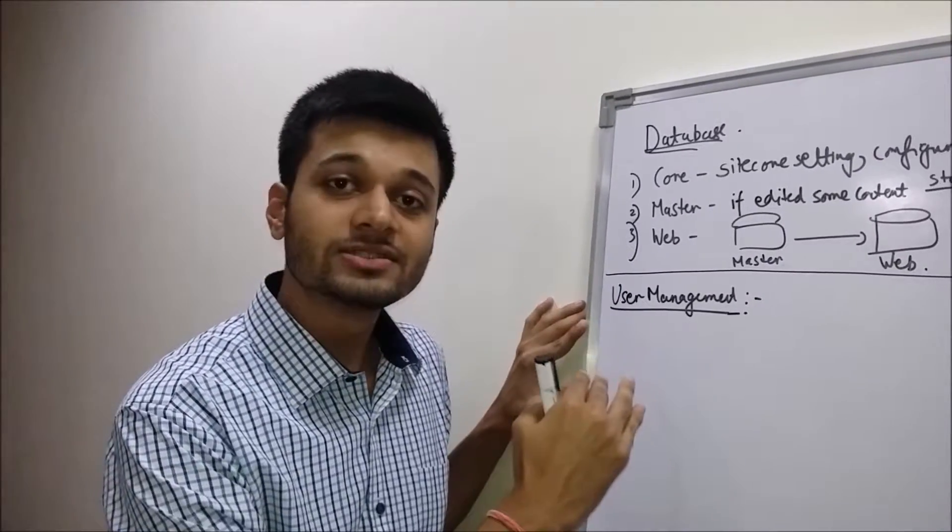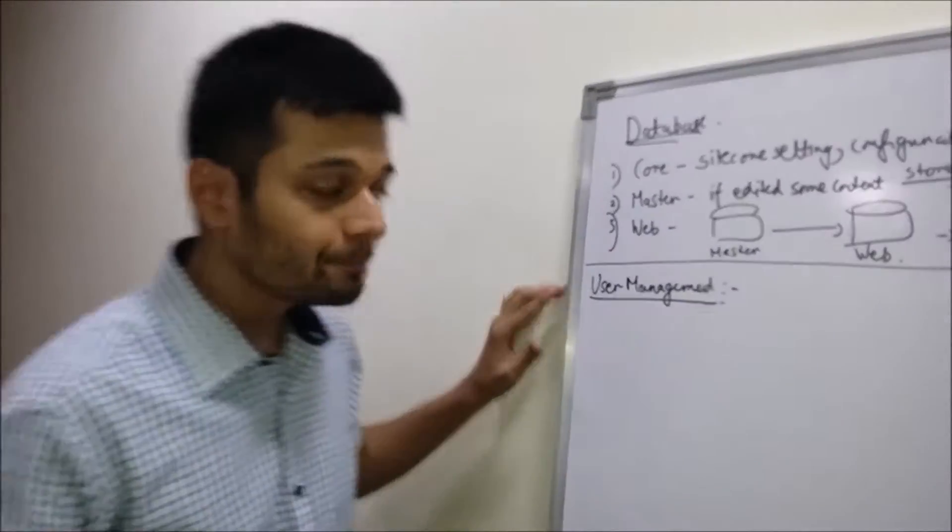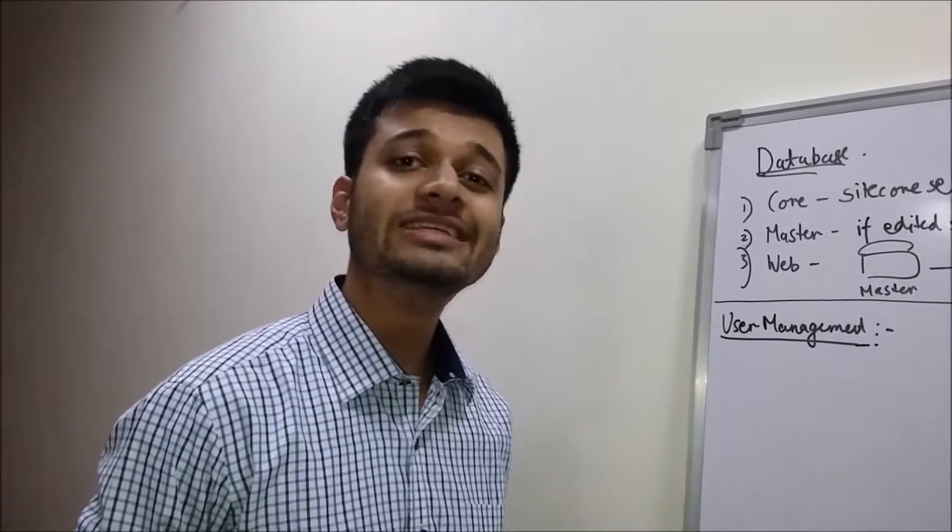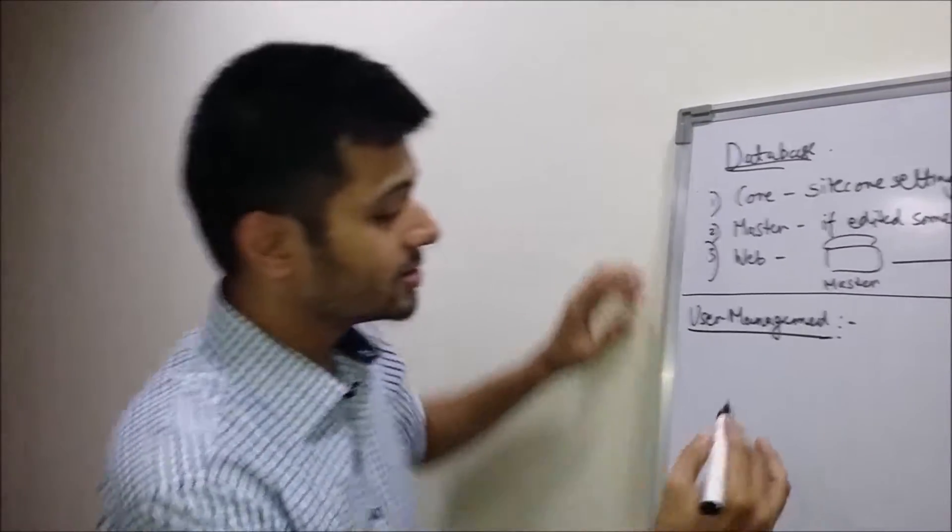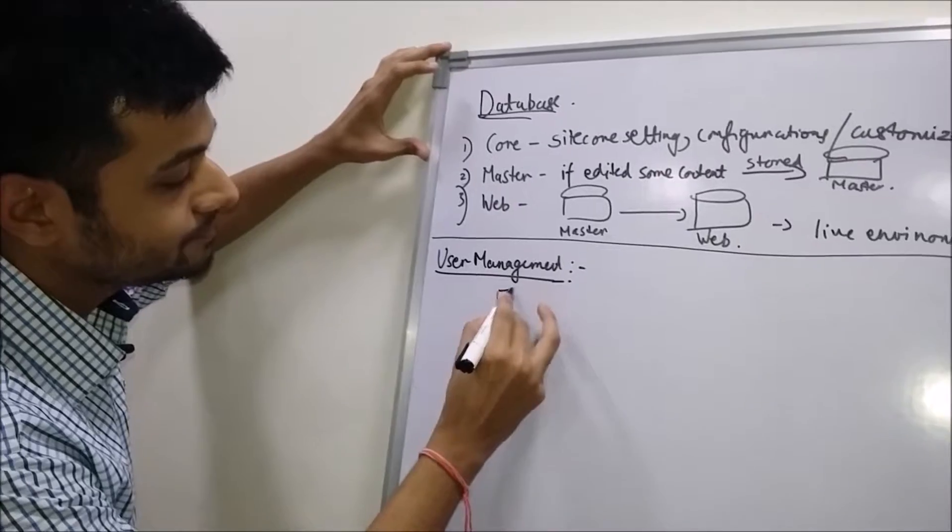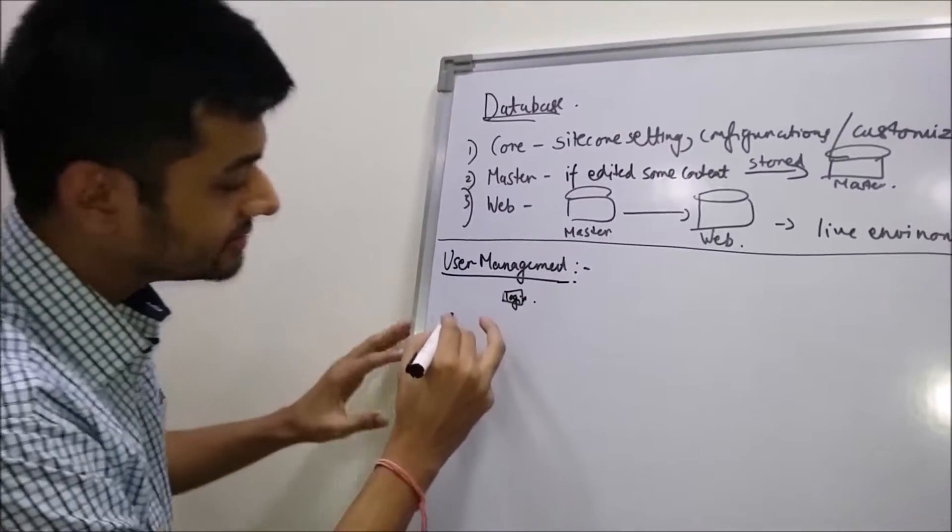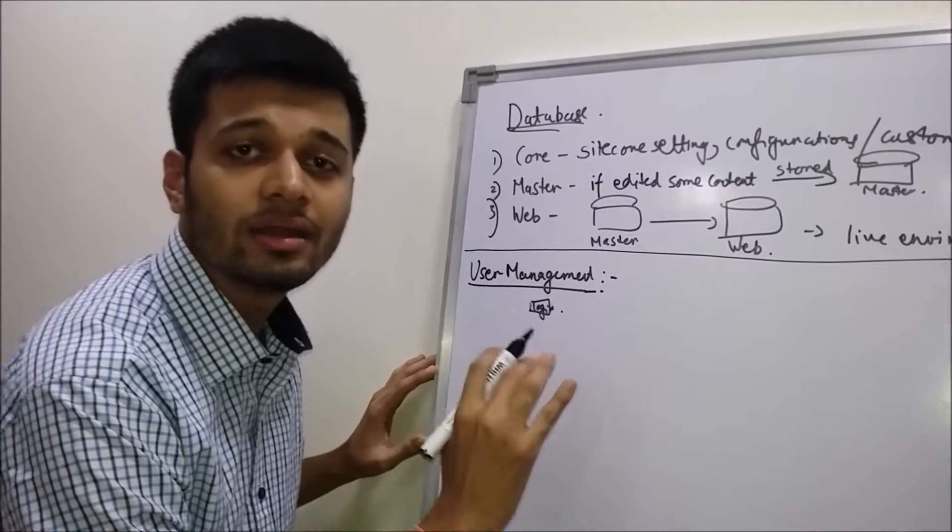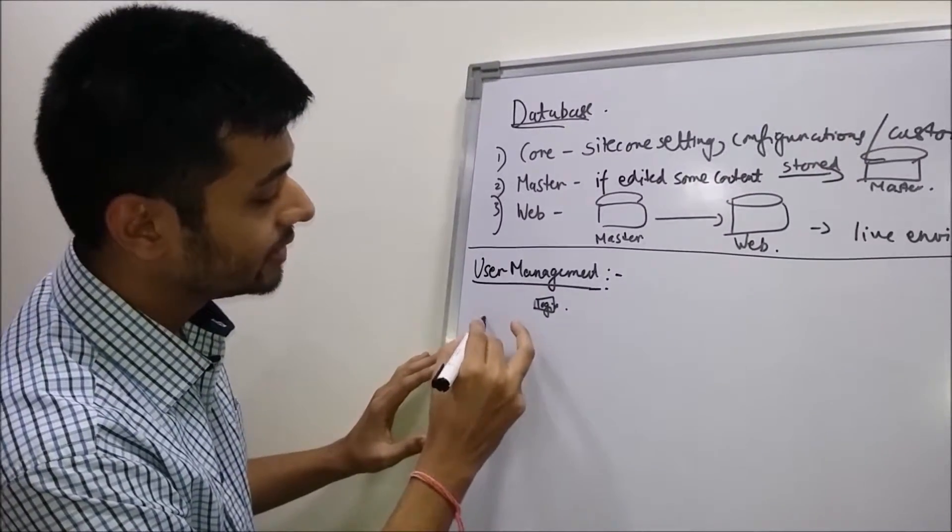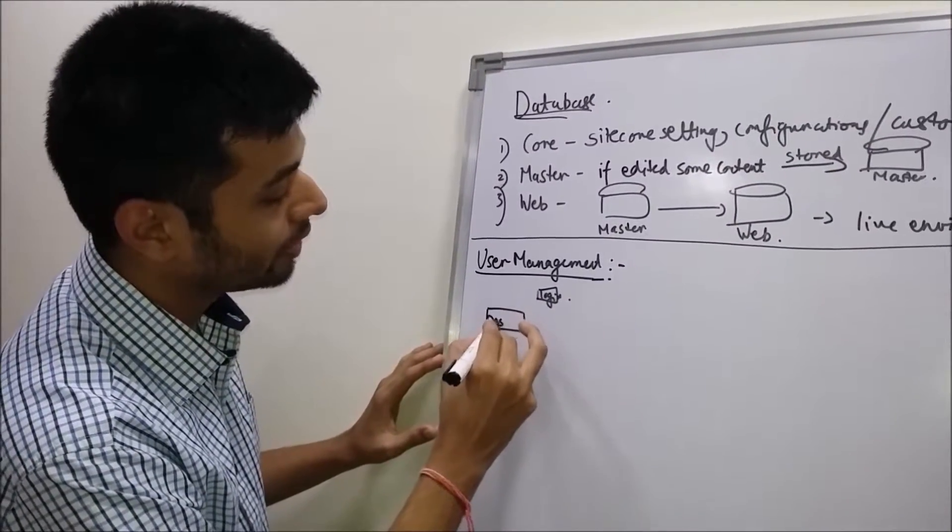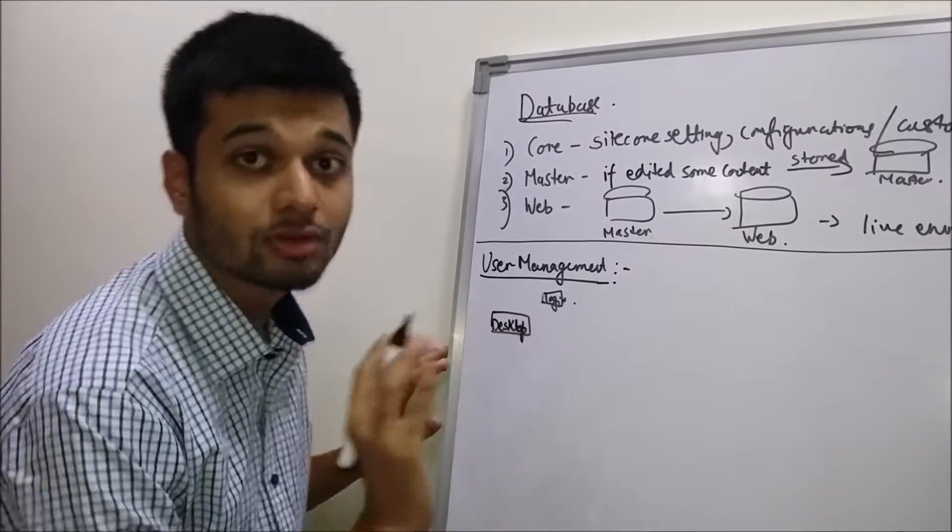So everyone must have seen the login page of Sitecore. There's a login button and there's some options like desktop, content editor, page editor. There's a desktop option over here on the login page itself. You have to click on that.